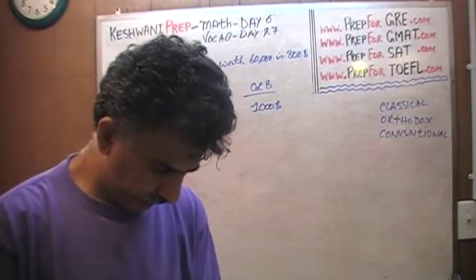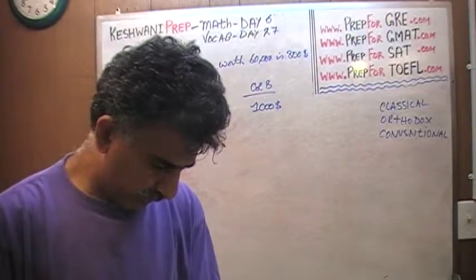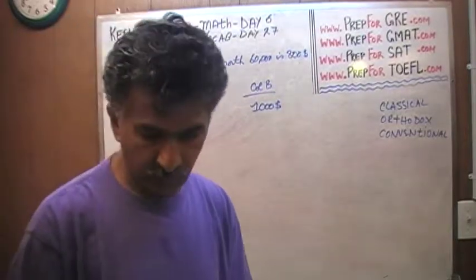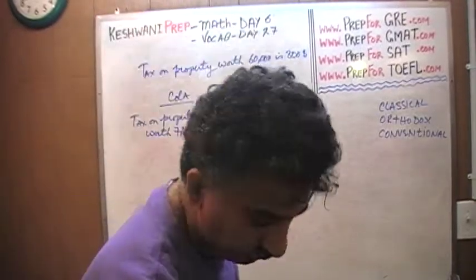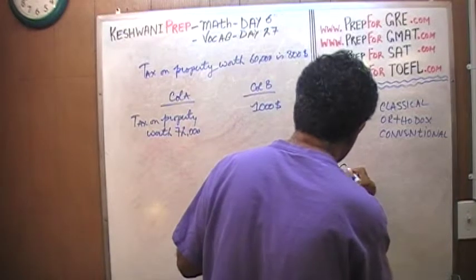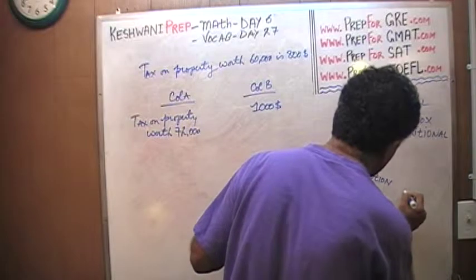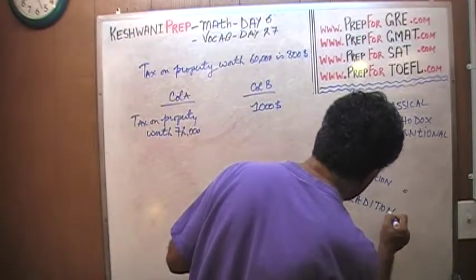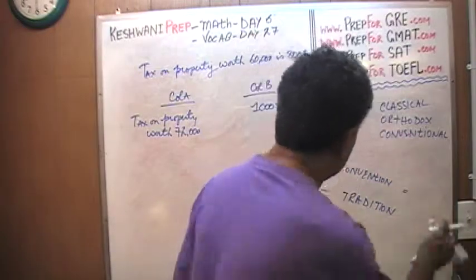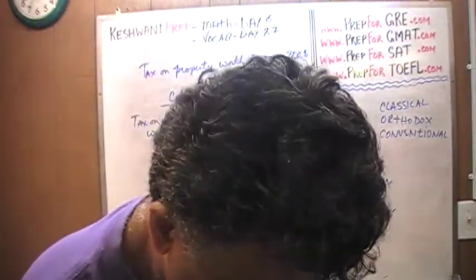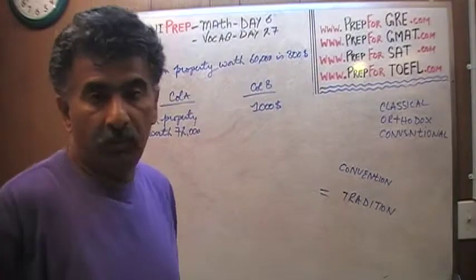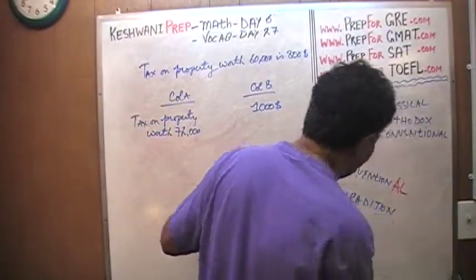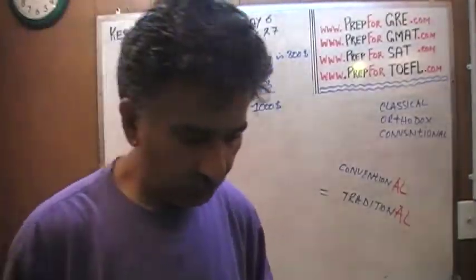Classical, orthodox, conventional. Of course, the word conventional comes from the word convention. Convention has two meanings. One meaning of the word convention you already know, a lot of people know it: a gathering or a meeting. People go to a convention, a gathering, a meeting, that's one meaning. The other meaning of the word convention is tradition. The word convention means tradition, which is a noun. We're going to turn this into an adjective: conventional, traditional. So if something is traditional, you suppose it's conventional.